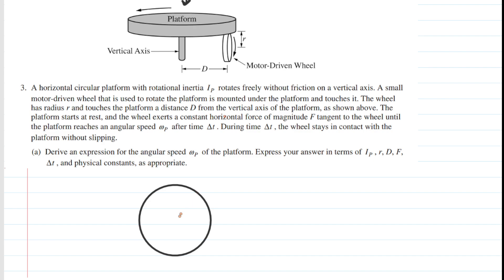We'll label the radius of that platform. If you go back to the original diagram, the radius of the platform runs from the central axis all the way out to the edge, represented by the distance capital D. The wheel, which is that small white disk, exerts a constant horizontal force of magnitude F tangent to the wheel until the platform reaches a particular angular speed. So we draw that force tangentially on the platform and label it F.